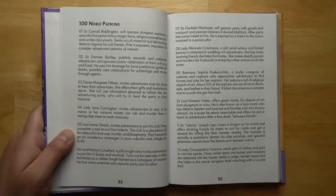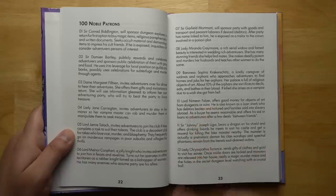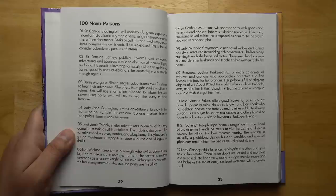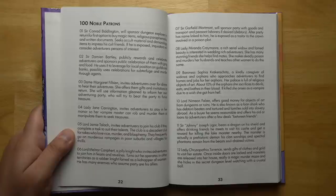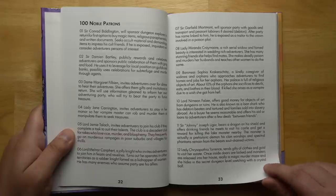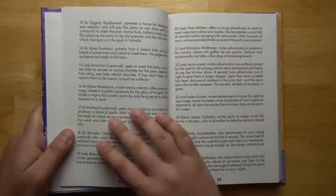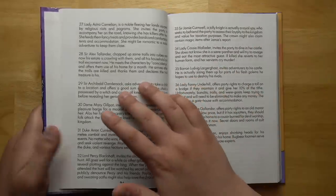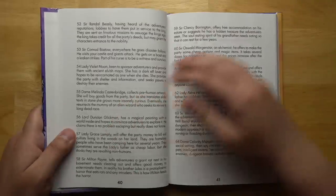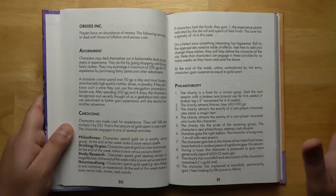We also have 100 noble patrons. For example, Lord Nimeon Falzer offers good money for objects of art from dungeons or ruins. He is known as a loan shark who has debtors beaten and tortured and families sold into slavery abroad. As a buyer, he seems reasonable and offers his aid or loans to adventurers. Most of these people have little twists that will get you in serious trouble, which adds more complications.